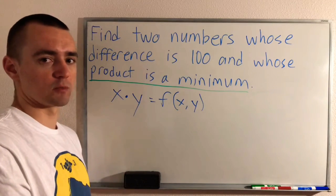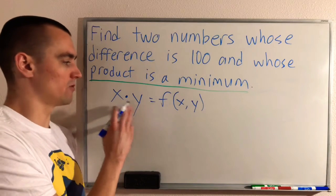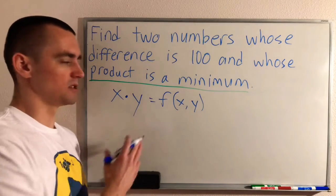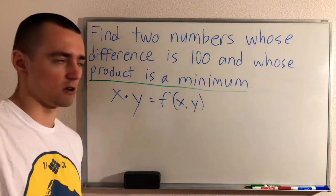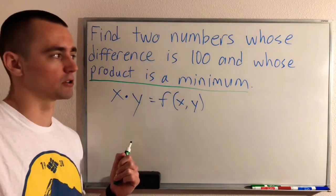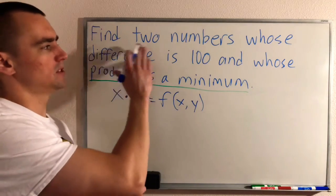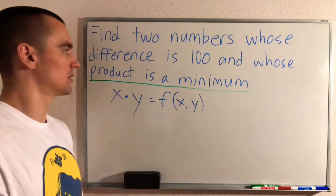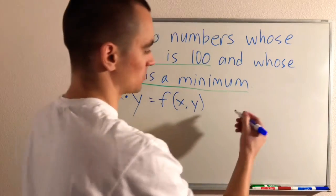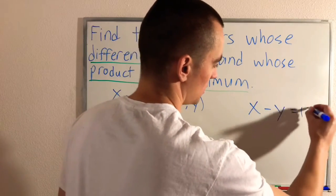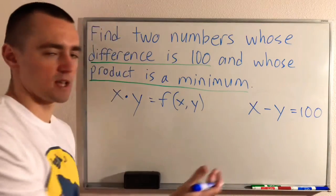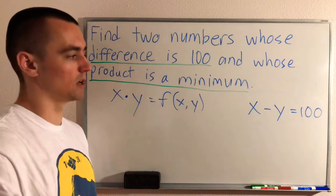We want to minimize this function, but minimizing a multi-variable function is usually harder than optimizing a single-variable function. So we want to use our restrictions to turn this into a single-variable function. Our restriction is that the two numbers must have a difference of 100 — meaning x minus y equals 100. This is the only restriction we have here.